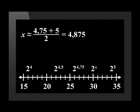This is still less than 30. Therefore, we bisect the interval between 4.75 and 5 and get 4.875. Let's punch this into a calculator: 2 to the power of 4.875 is equal to 29.34. This is the closest we've been so far.